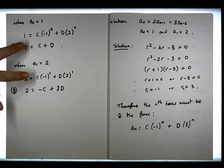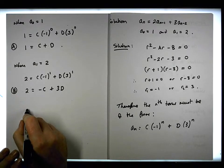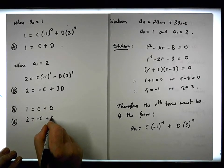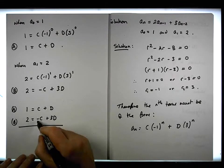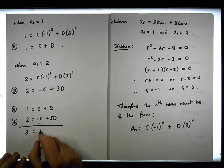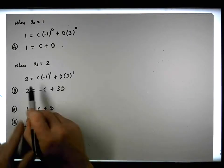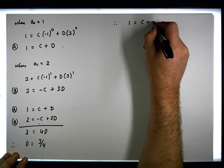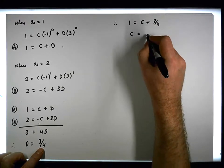We now have two equations in two unknowns. From equation (a): 1 equals c plus d. From equation (b): 2 equals minus c plus 3d. If we add these two equations together, the c's cancel out. So 2 plus 1 gives us 3, and d plus 3d gives us 4d, so therefore d must be equal to 3 quarters. Now that we know d, we can find c: since 1 equals c plus d and d is 3 quarters, that implies c must be equal to 1 minus 3 quarters, which gives us a quarter.